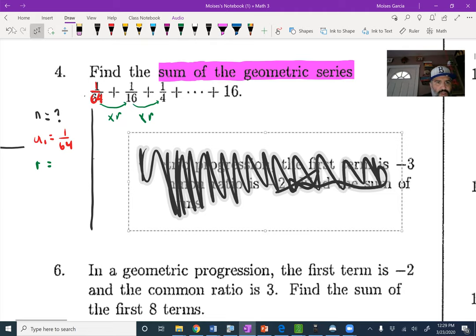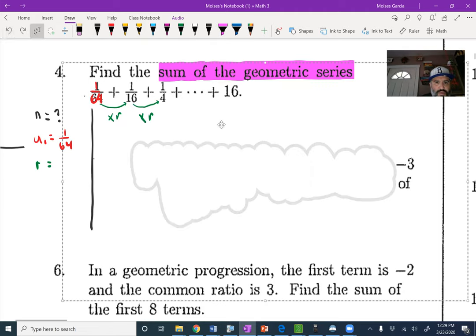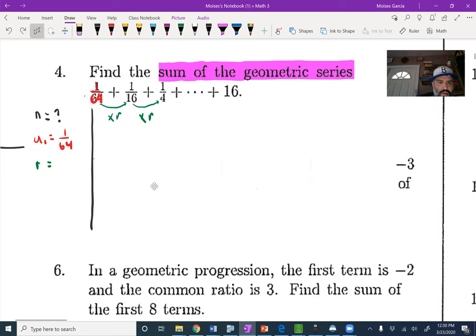So R here is 4. Now that you know R is 4, then you can set up an equation here that's going to help you determine any value along this series. So we started with 1 over 64 and we're multiplying that value by 4, and we're going to do that n minus 1 times. I'll just call it a sub n here.